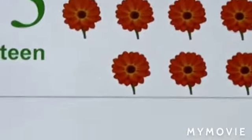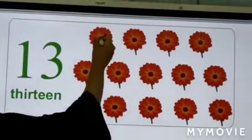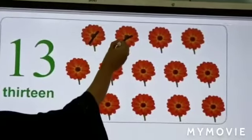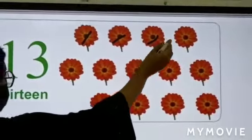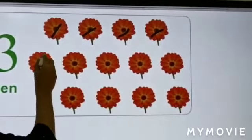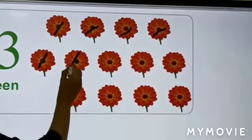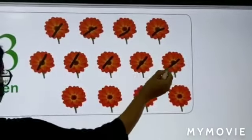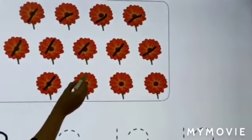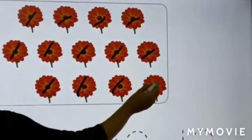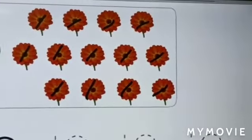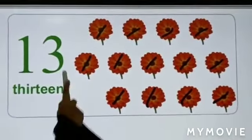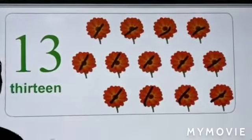Okay, let's count. How many flowers do we have here? Let's count together. One, two, three, four, five, six, seven, eight, nine, ten, eleven, twelve, thirteen. Yes, very good job. We have thirteen flowers here.